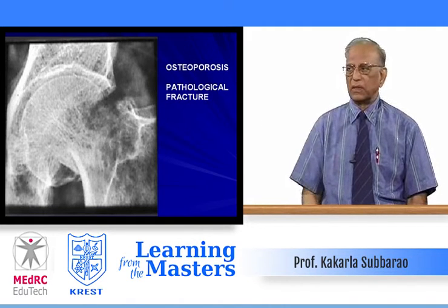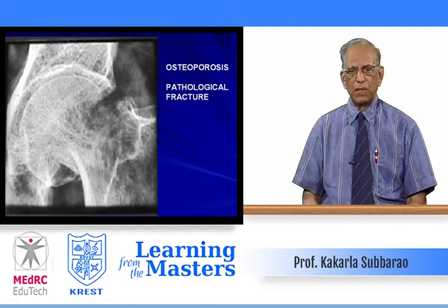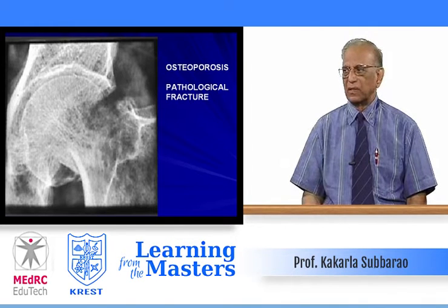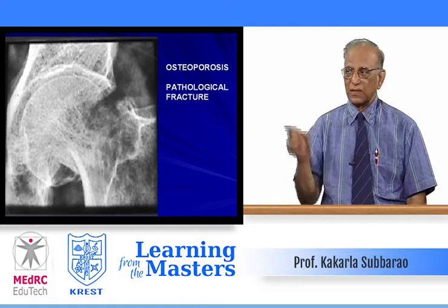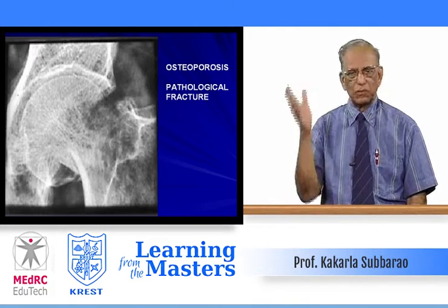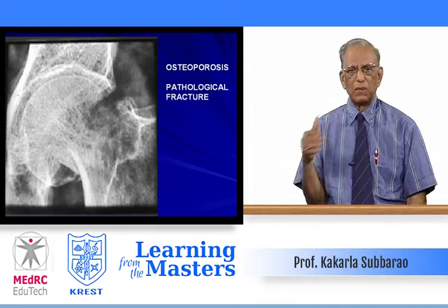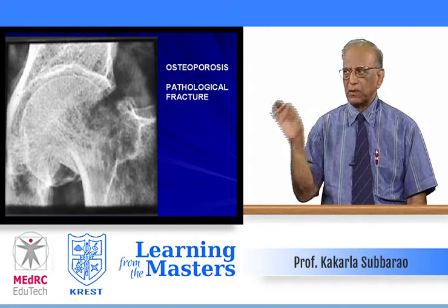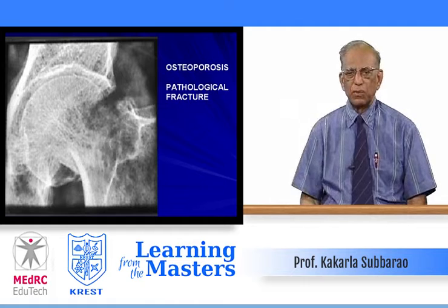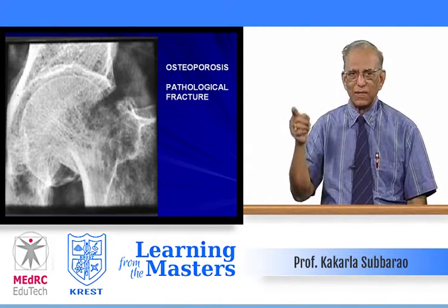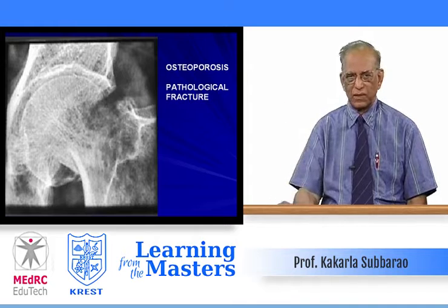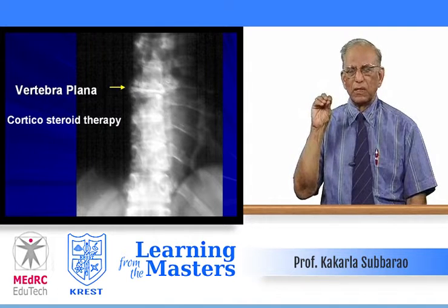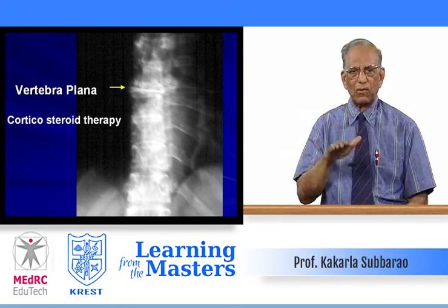A 60-year-old male came with a fracture while stepping down stairs — a pathological fracture, not just traumatic. The pathology could be osteoporosis or sometimes plasmacytoma or myeloma; investigations of the rest of the body are needed. The point is osteoporosis — note the trabecular pattern, thin white cortical line, and disruption of the trabeculae. In the spine, complete collapse and wedging of the vertebral body leads to vertebra plana — almost like a wafer — particularly due to corticosteroid therapy.